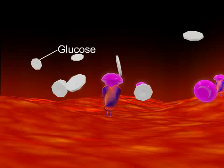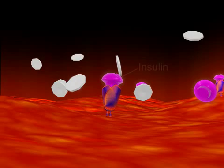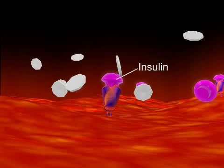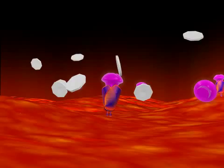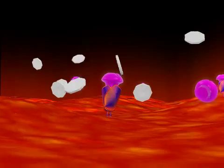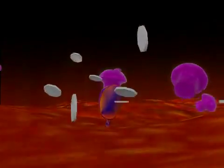The excess glucose in the blood reacts with proteins in tissues to form what are known as advanced glycation end products, or AGEs. AGEs create an inflammatory condition in the vasculature, which causes heart disease and damage to other organs, such as the kidneys.